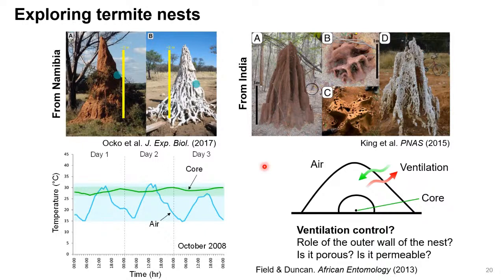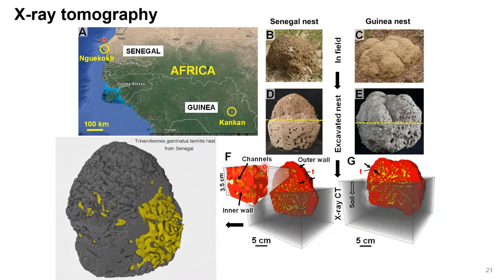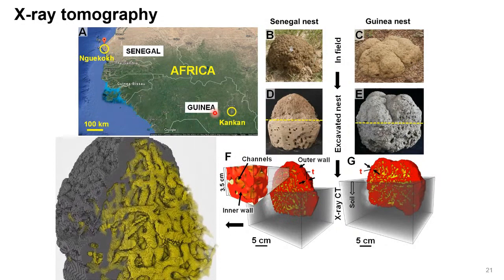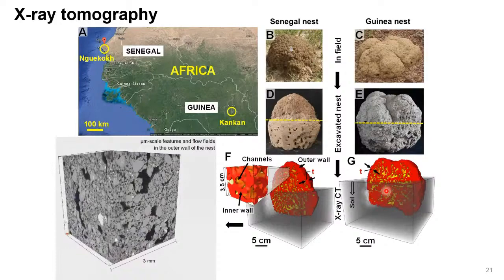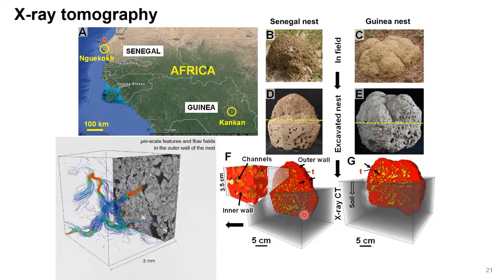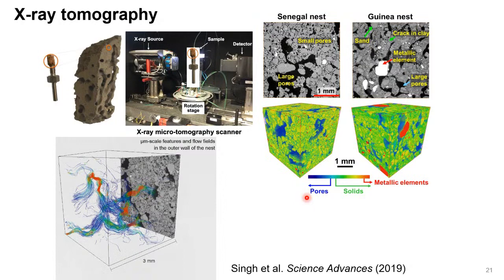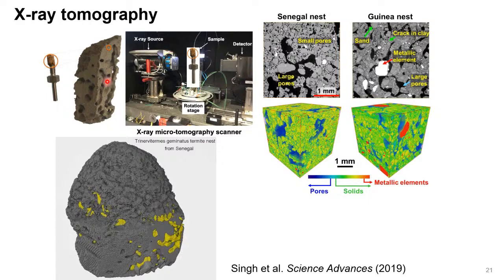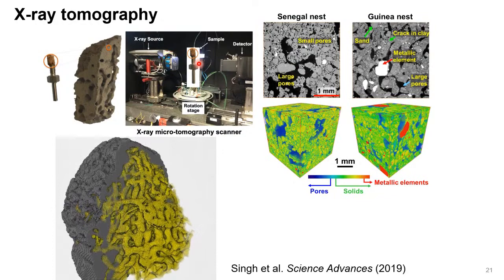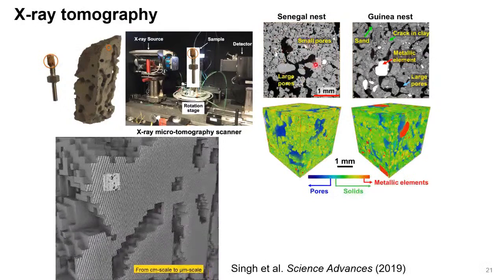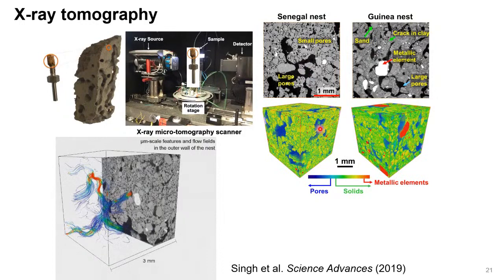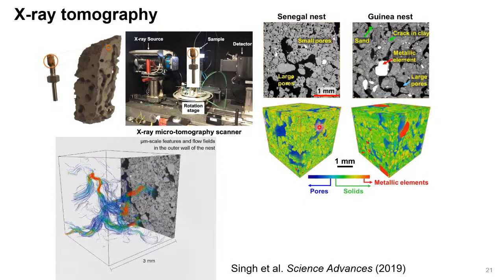We made a collaboration with people from France who supplied samples from two different countries in Africa — Senegal and Guinea, about a thousand kilometers apart. We did imaging with medical CT scanning to look into the structures, where yellow shows where the termites move and red shows the solid surfaces. Then we took samples from the outer side, inner side, and many different portions of the nest from both countries and put them into our scanner for micro-scale imaging. We were very surprised — the 3D image shows blue larger pores that are surprisingly connected to each other in all samples.